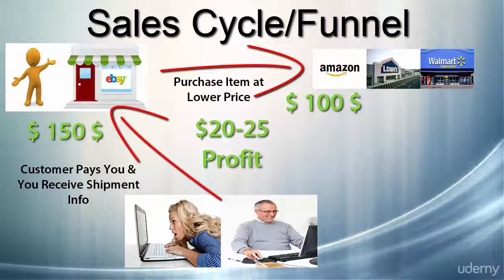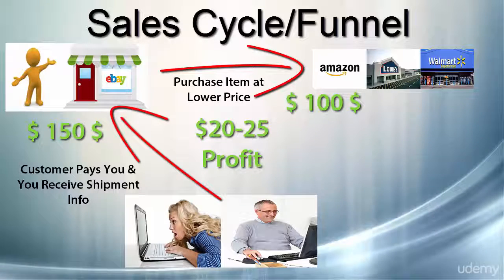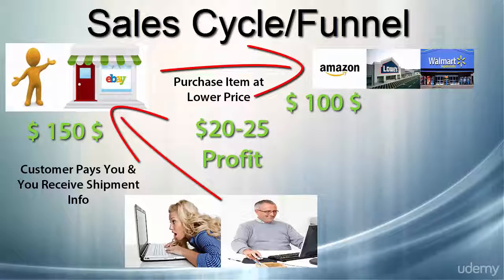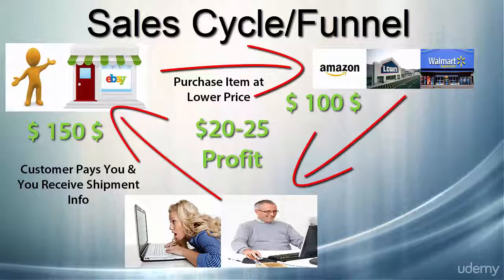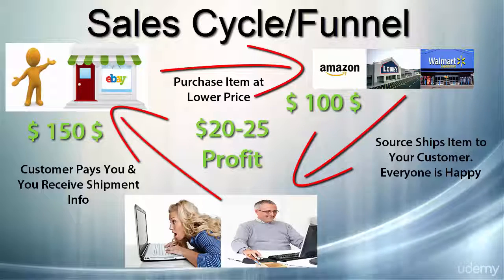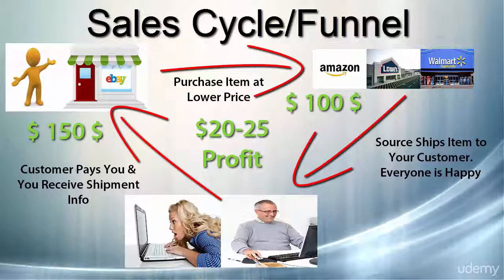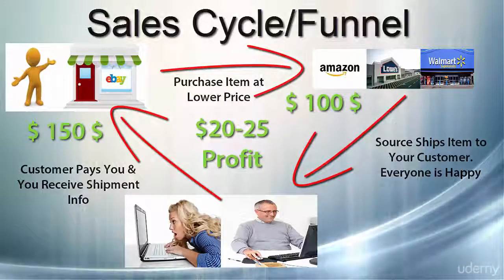When you order the item, you put John Gardner's name and shipment address to Ada, Oklahoma. Your source ships it directly to John for you. John receives his item, and 99.9% of the time everything goes smoothly and everybody is happy. That's how the sales funnel looks from beginning to end.